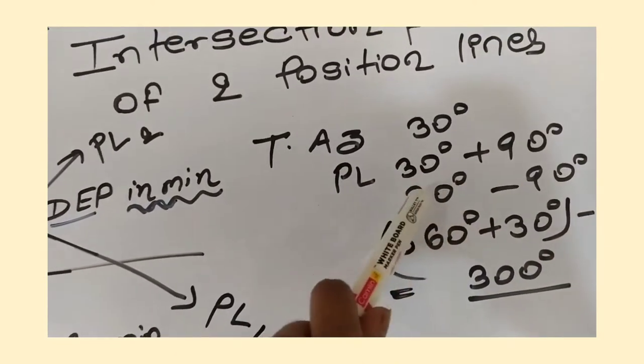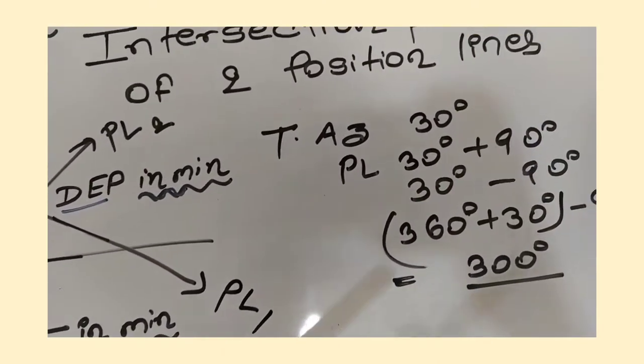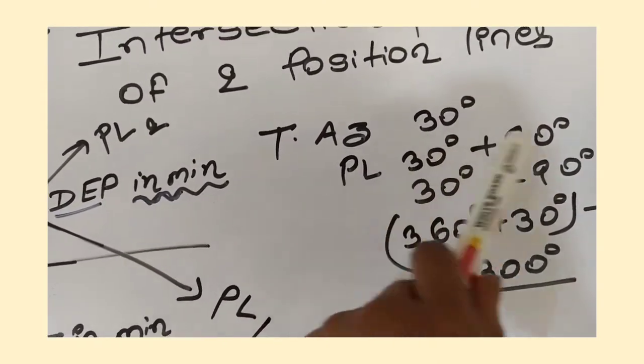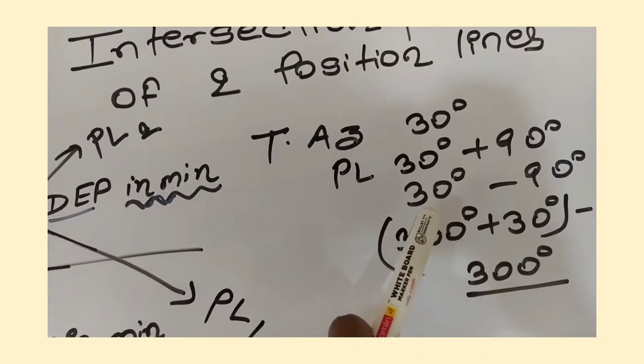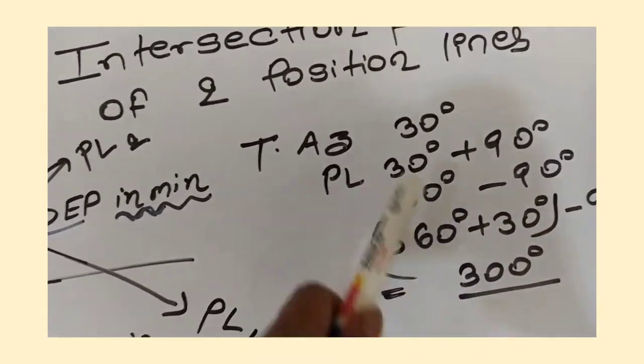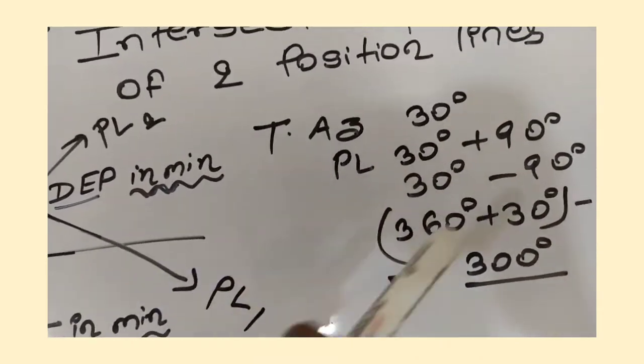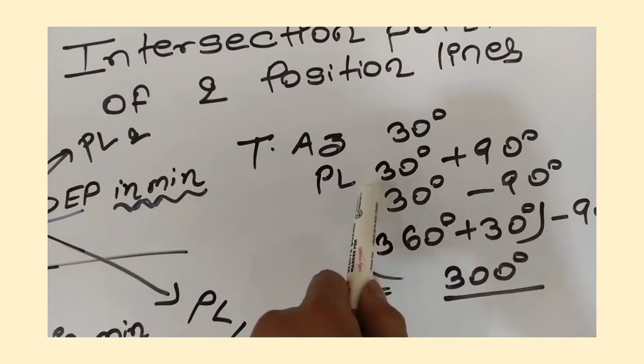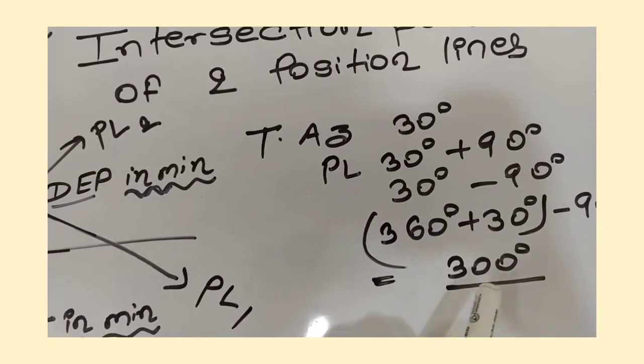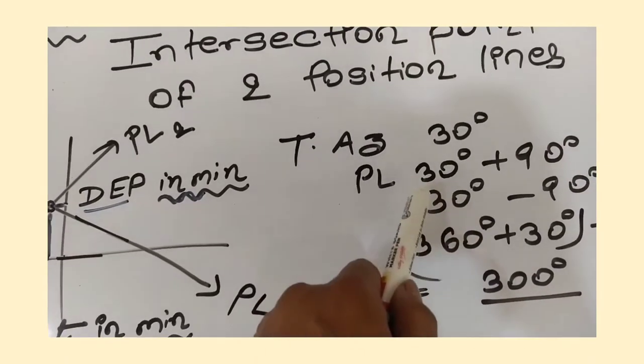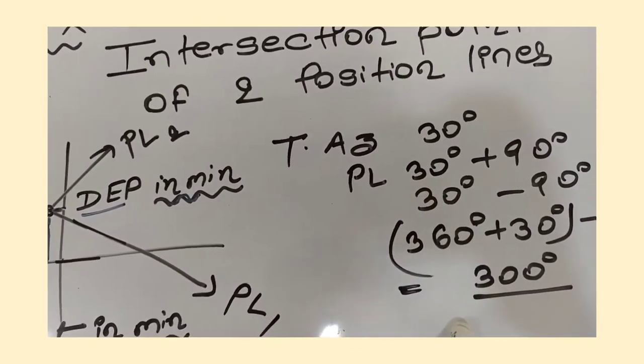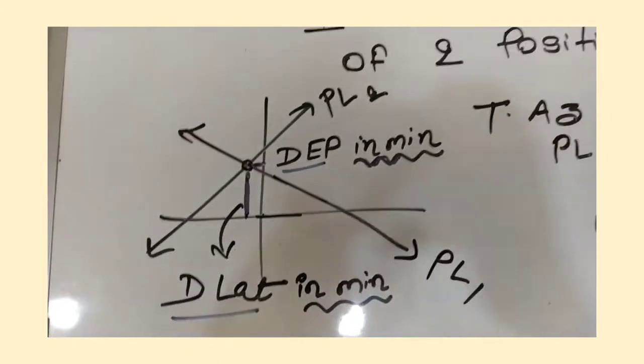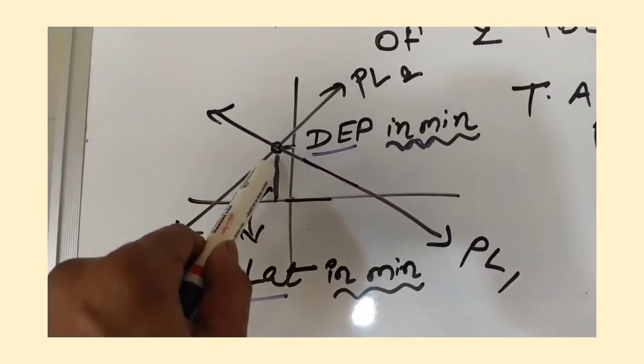Don't write 30 plus 90 equals 120 degrees and 30 minus 90 equals minus 60. This will not be a valid answer. You should add 360 degrees to 30 degrees and then minus 90 degrees will give you 300 degrees. So PL will be 120 degrees to 300 degrees. Where these two PLs intersect, that will be the fix.